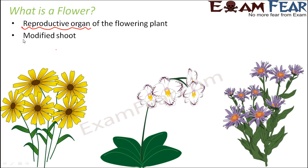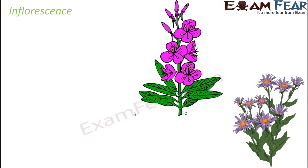Flower is nothing but a modified shoot. Just as we talked about leaves getting modified to form spines in cacti, similarly a flower is a modification of the shoot. Basically, the stem of the plant — the entire shoot system — gets modified to form a flower. This is something very important to remember before we talk about the structure, parts, or types of flower.